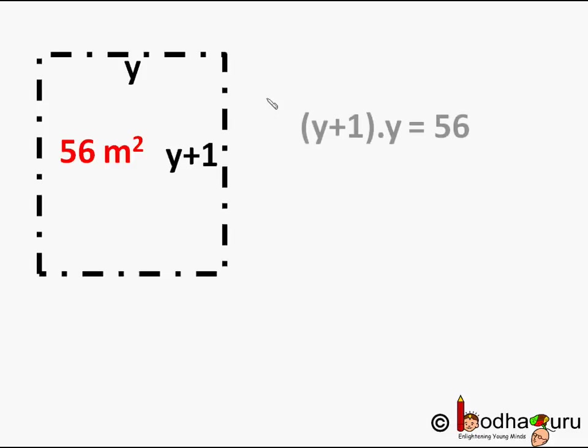This comes out to be (y+1) which is length into y which is breadth equal to 56 which is given 56 square meter. Opening the brackets we will get y² + y = 56. Taking 56 to the left hand side, y² + y - 56 = 0.